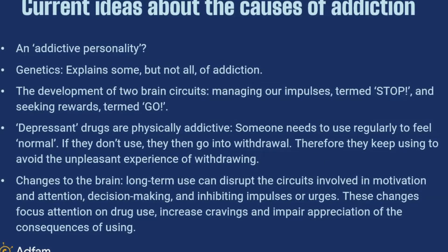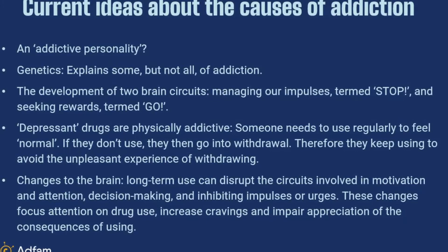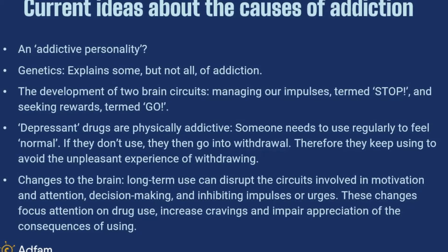Long-term substance use leads to changes in the brain, and it's important to recognise these because they explain some of those characteristics I was looking at earlier. Long-term use can disrupt the circuits involved in motivation, attention, decision-making, and inhibiting impulses and urges. The result is that these brain changes focus attention increasingly on drug use, increase cravings, and impair someone's appreciation of the consequences of using. So notice those characteristics again: someone feels compelled to use, they're preoccupied with using, and they can't see what may be really obvious to you about the negative impact.